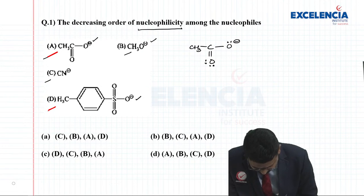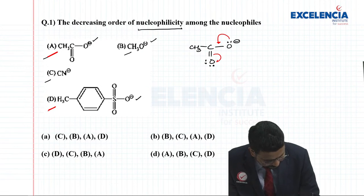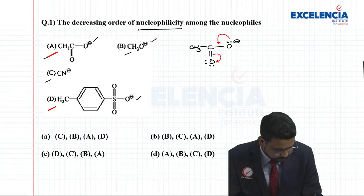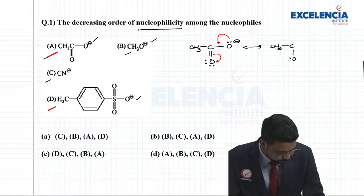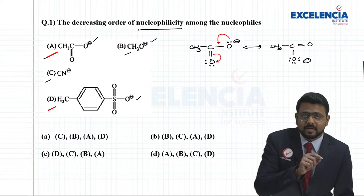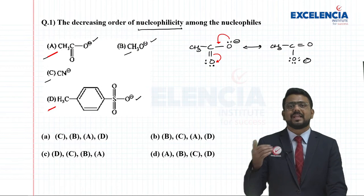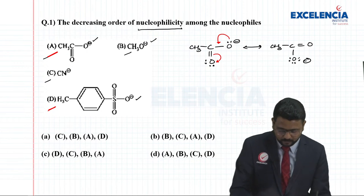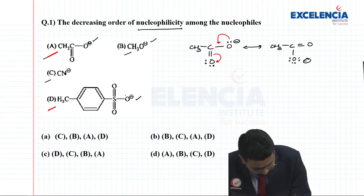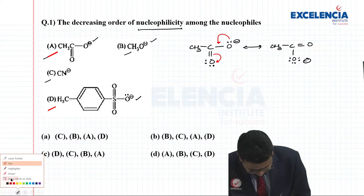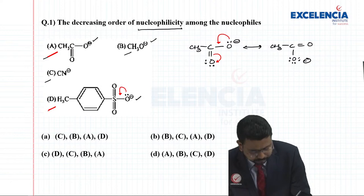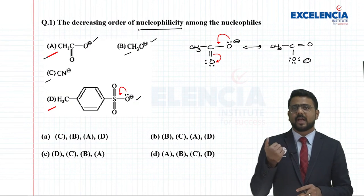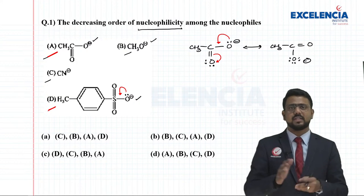If I write its resonating structure, you get CH3-C(-O⁻)=O. So if these lone pairs of electrons on oxygen are involved in resonance, they obviously cannot be easily donated to any electrophile or positive center. The same is the case with structure D — the lone pairs on oxygen could also be occupied in resonance. So neither A nor D could be a stronger nucleophile amongst these four.